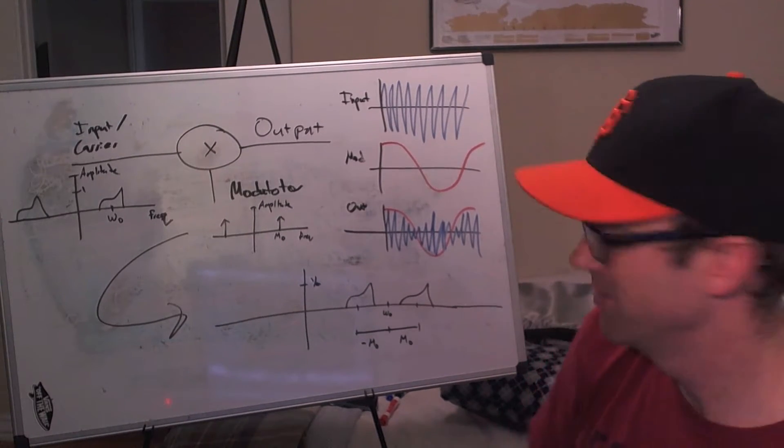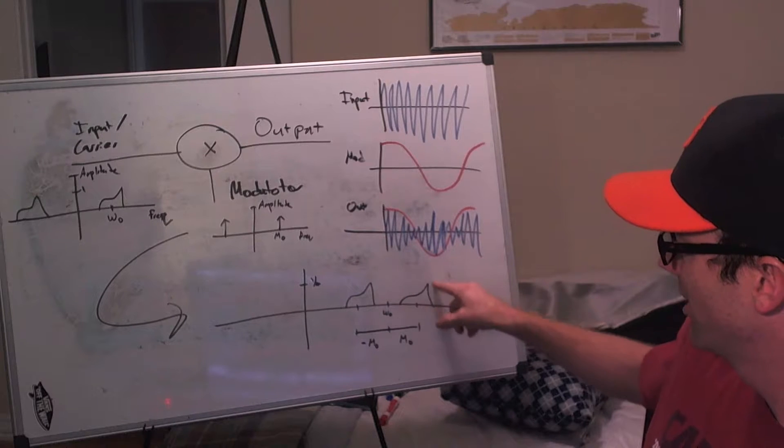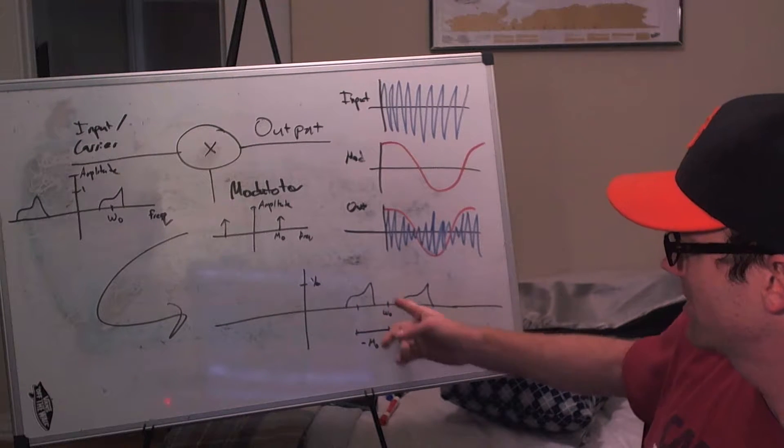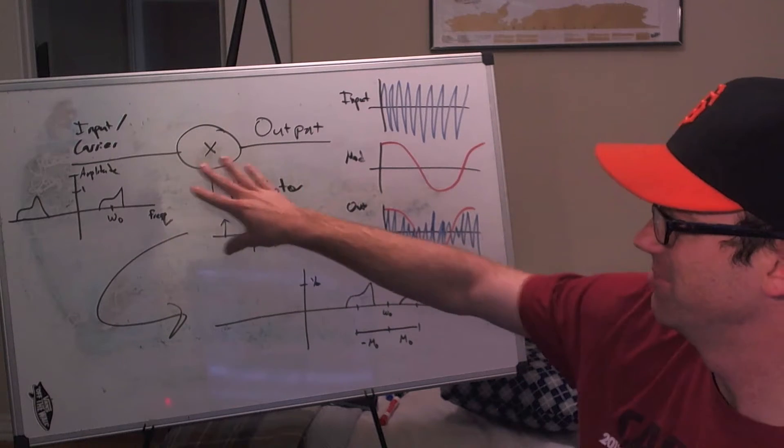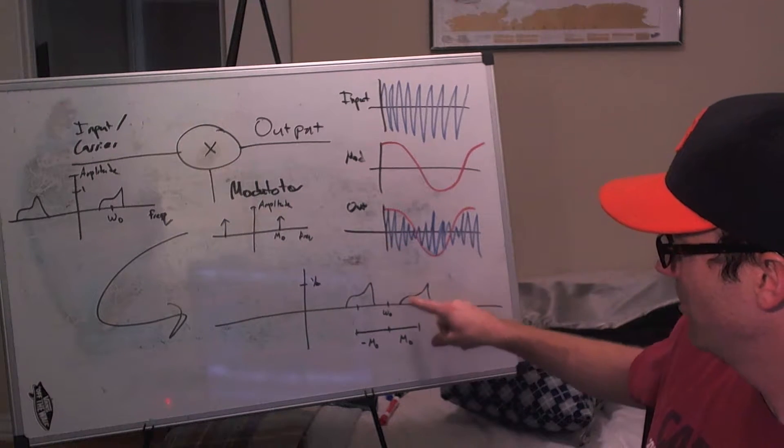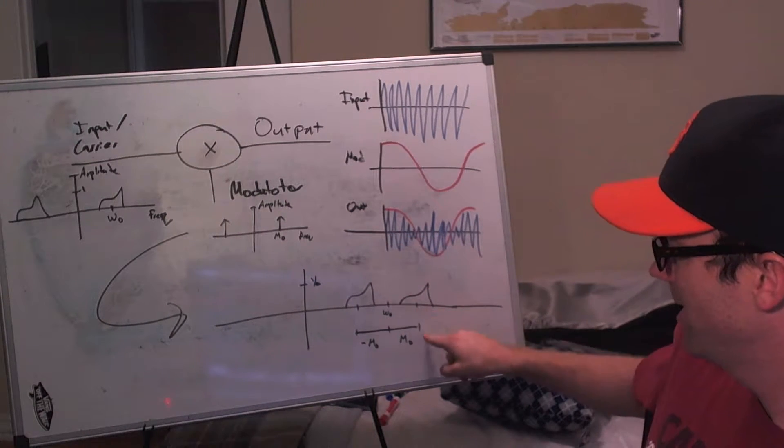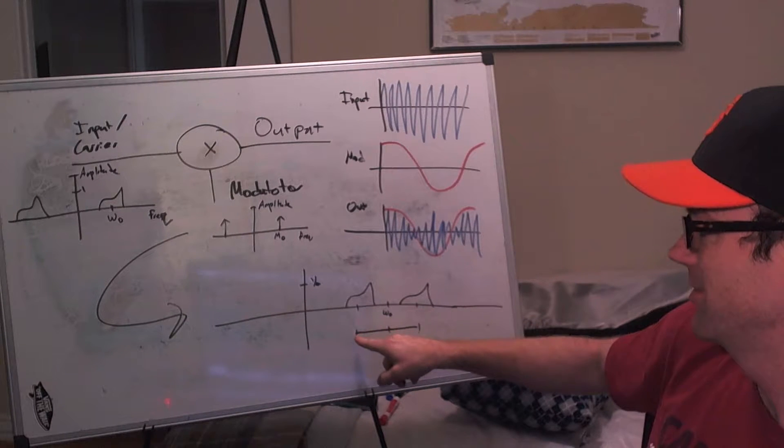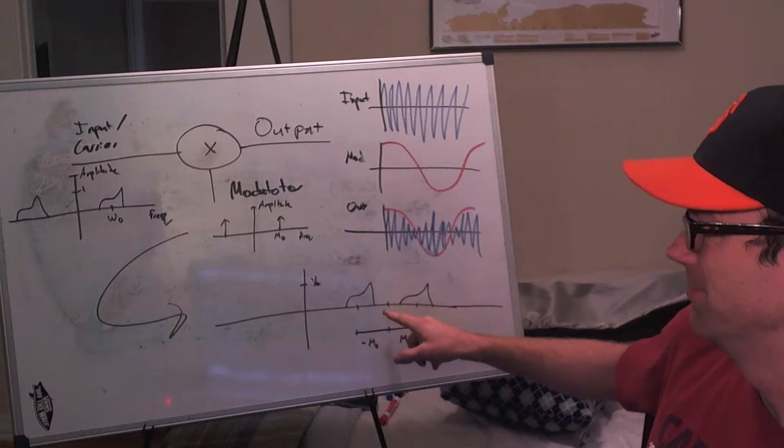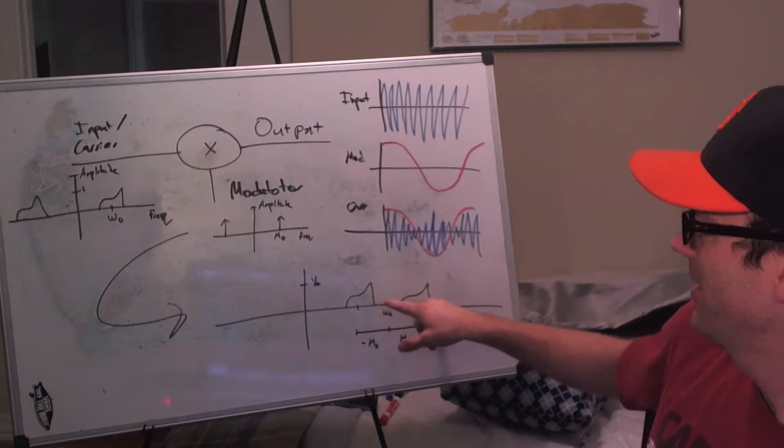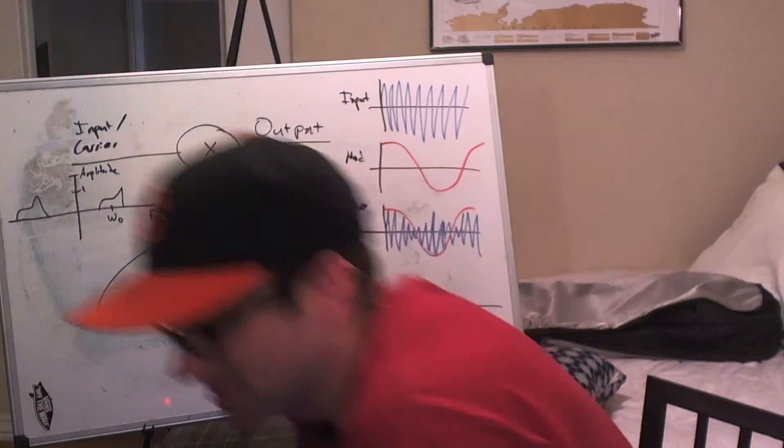And the result is that we end up with this interesting thing where you get sidebands that are separated from your original signal point. So this is the output of modulating these—you get one sideband that is shifted up m0 and one sideband that is shifted down m0 from your original frequency. And then, actually, by the way, let me just draw this in real quick.